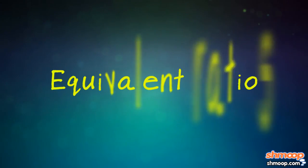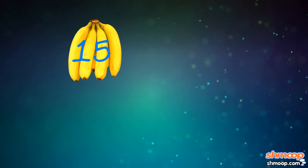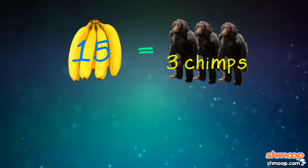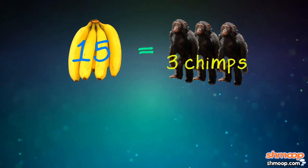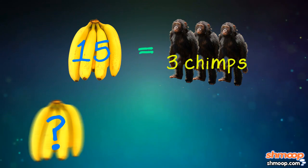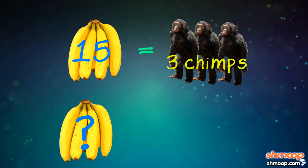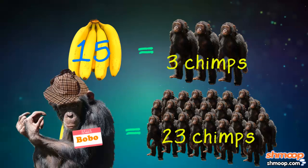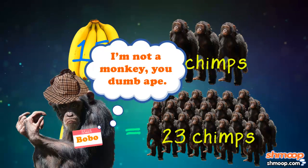This is a perfect example of equivalent ratios. We know exactly how many bananas will feed three chimps. Now we just need to figure out how many are needed to feed 23 — and don't forget Bobo. And these hungry, hungry monkeys, right?